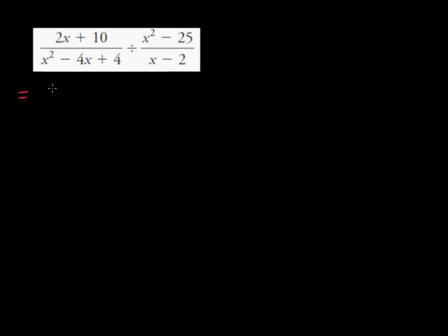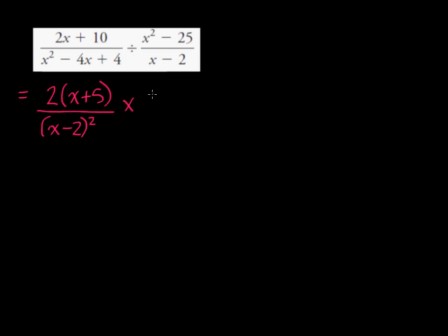If we factor the numerator in the first rational expression, we get 2 and then in brackets x plus 5. And the denominator, if we factor that, we get x minus 2 squared. And then we're going to multiply by the reciprocal of this rational expression, so we're going to multiply by x minus 2 over, and then we want to factor x squared minus 25, which is the difference of squares, and factors as x minus 5 times x plus 5.